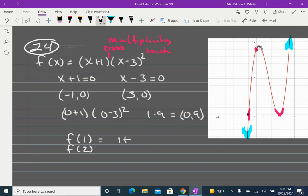1 plus 1, 1 minus 3 squared. 1 plus 1 gives me 2 times negative 2 squared. That's going to give me an 8. And if I look at my graph, 1, 8. Confirmed.